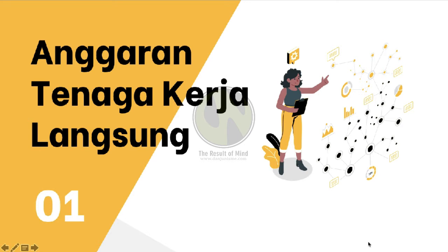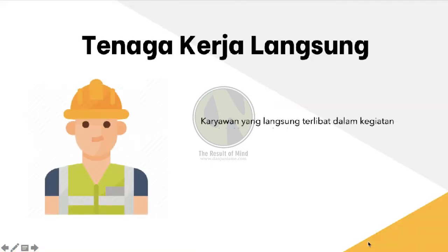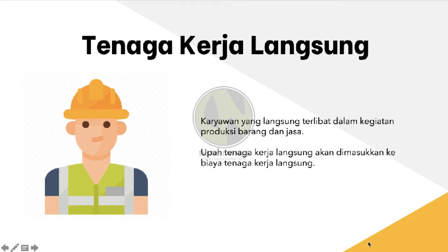Pertama, kita bahas dulu anggaran tenaga kerja langsung. Perusahaan menggunakan tenaga kerjanya untuk mengubah bahan baku menjadi barang jadi, dan perusahaan akan membayar upah. Untuk perusahaan manufaktur, tenaga kerja yang terlibat dalam proses produksi dikelompokkan menjadi tenaga kerja langsung dan tenaga kerja tidak langsung. Tenaga kerja langsung adalah karyawan yang langsung terlibat dalam kegiatan produksi barang dan jasa. Biaya yang dikeluarkan untuk membayar upah tenaga kerja langsung akan dimasukkan ke biaya tenaga kerja langsung, yang menjadi salah satu komponen dalam biaya produksi. Contoh tenaga kerja langsung adalah tenaga kerja yang menjahit baju di perusahaan konveksi.